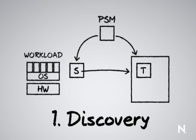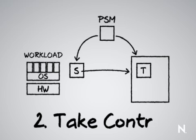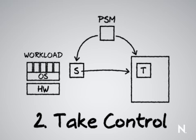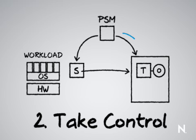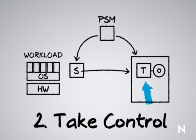The second step is take control. In any migration that PlateSpin Migrate executes, we need a certain amount of control over the source and target environment. Specifically for a P2V, PlateSpin Migrate needs to boot the target virtual machine into a special image that it sends down automatically as part of the job — the user doesn't typically need to prepare anything in advance. PlateSpin Migrate gets control of the target environment by placing it under control of a specially prepared boot image.